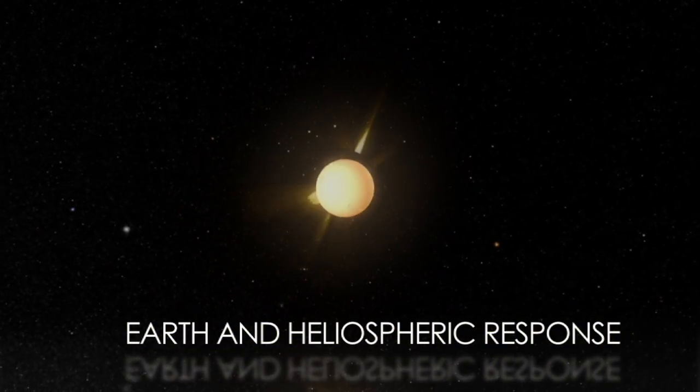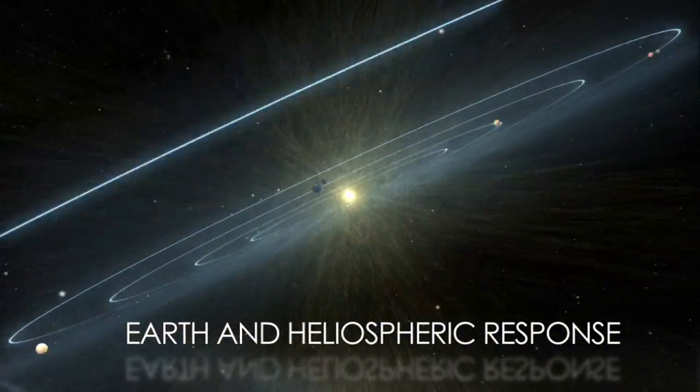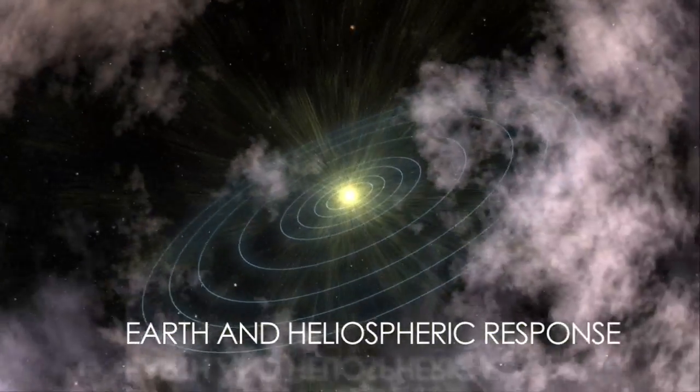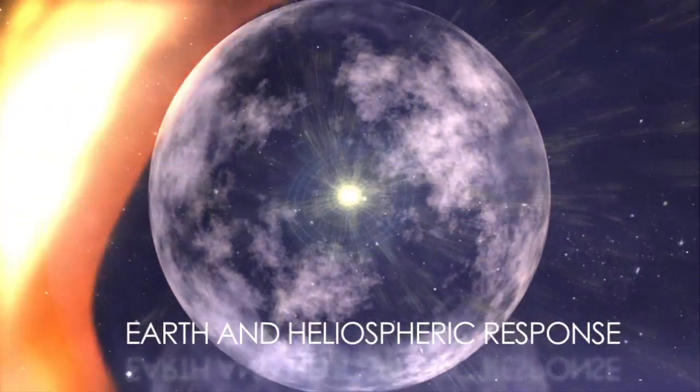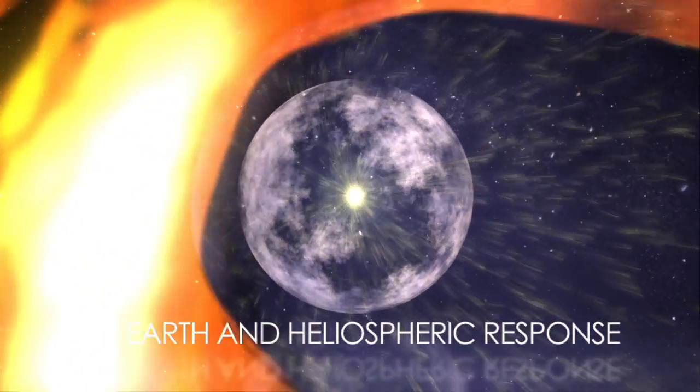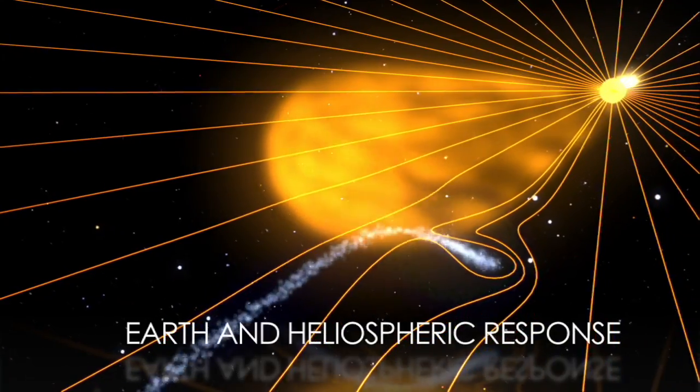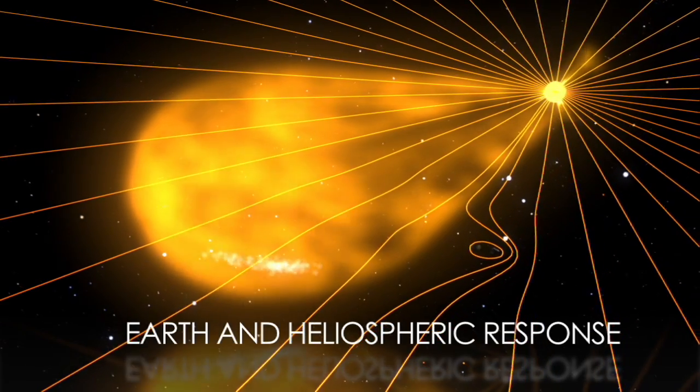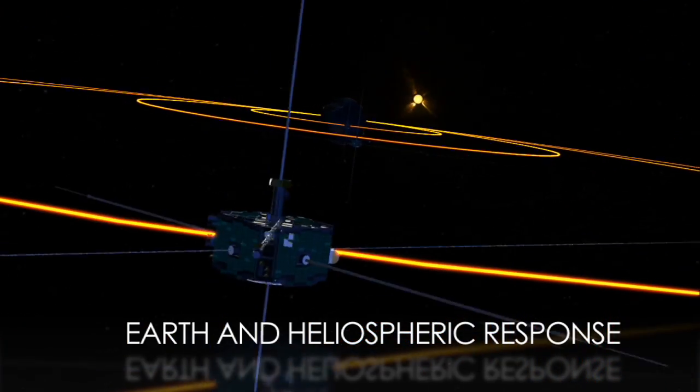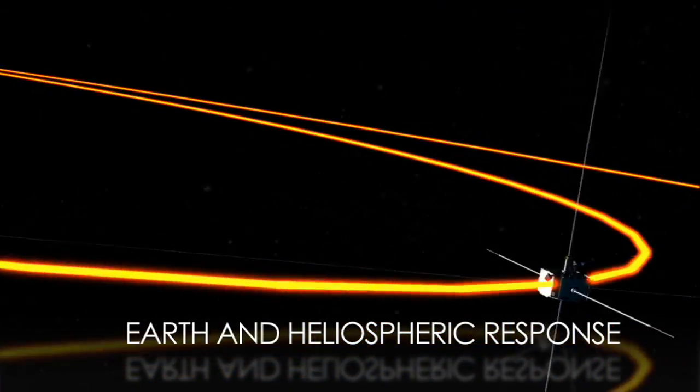Just as we need to understand the Sun, we also need to understand how the Earth and solar system react to it. Current and future missions will reveal how the edge of the Sun's influence interacts with the greater universe. Others study how objects in the solar system, such as comets, are affected by the Sun. Still more study how the Earth's magnetic field reacts to the Sun's activity.